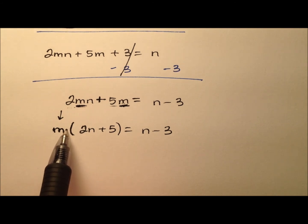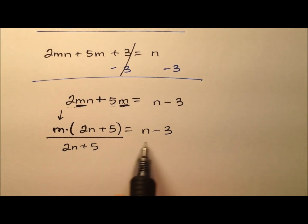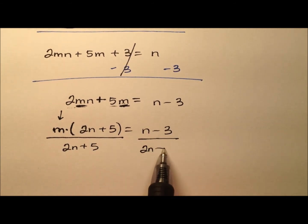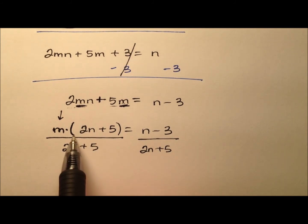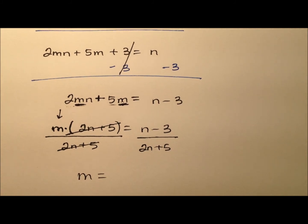Well, because when we are multiplying two things together and we want to get one of them by itself, we need to do division. So let's divide both sides of the equation by that 2n plus 5. So when I do that on the left side, the 2n plus 5 will cancel. And I will just have that m all by itself.